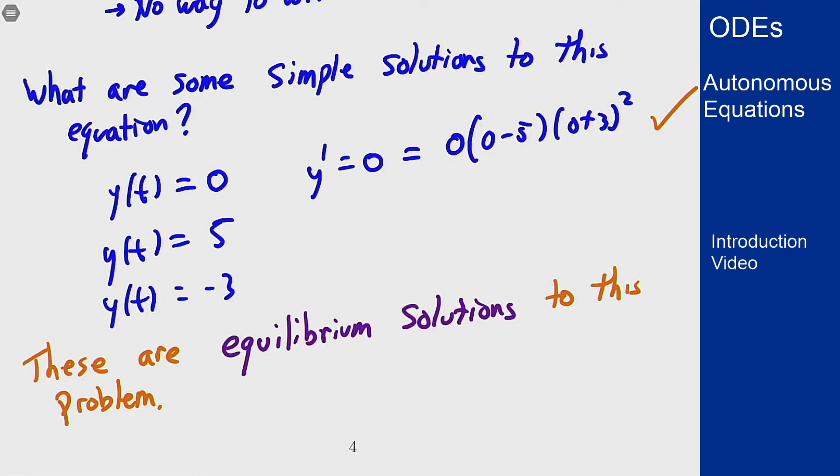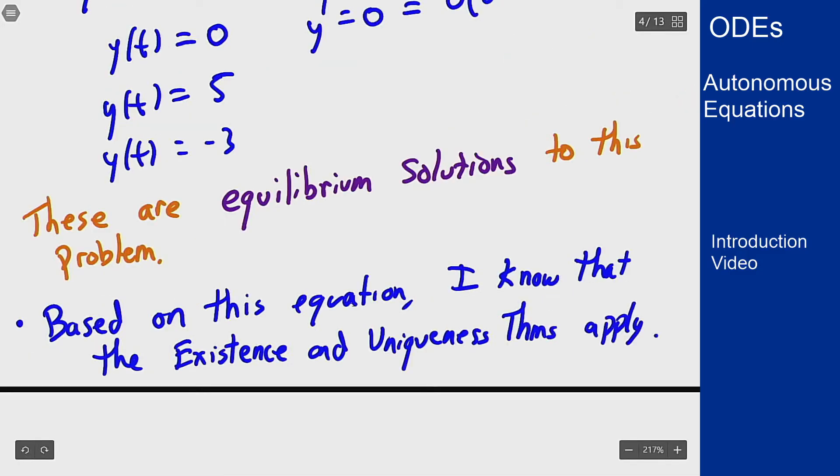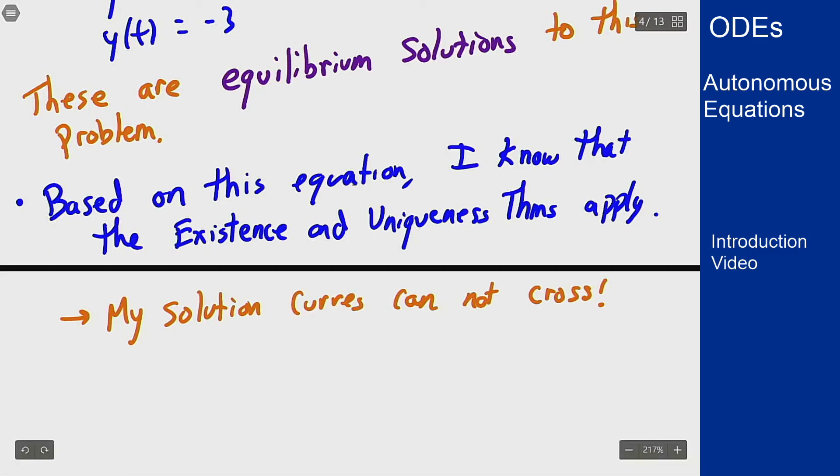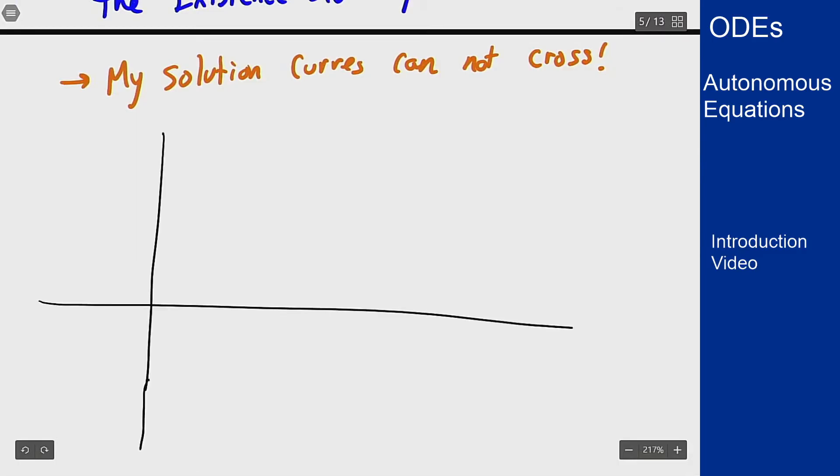Well based on my equation I know that the existence and uniqueness theorems apply. And what does that mean? That means that my solution curves cannot cross. It means I can now start to draw a graph of these solutions because I know that if I have my y-axis and my t-axis y equals 0 is a solution for all t.